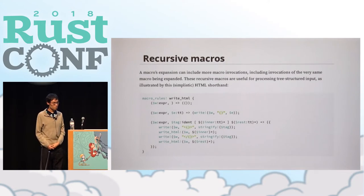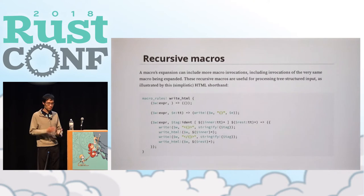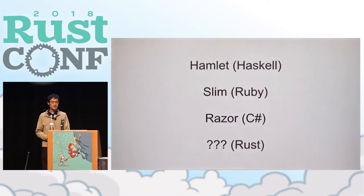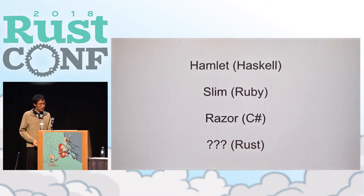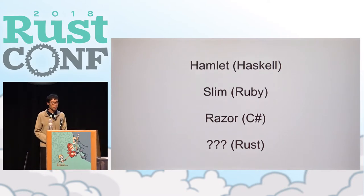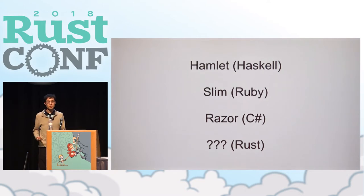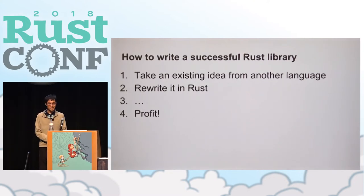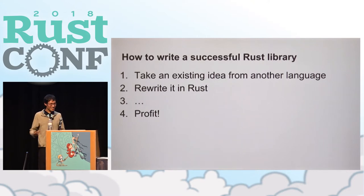When I saw that I thought, why don't I take this concept and develop it into a real-world practical library? This isn't the first place I saw this idea — I had already known about this general concept from other languages like Hamlet in Haskell, Slim in Ruby, and Razor in C#. In that sense Maud isn't really original, except for the fact that it's written in Rust, and I don't think that's a bad thing at all.